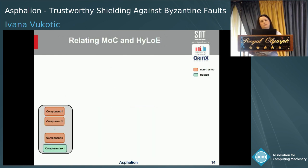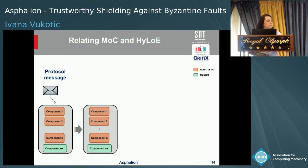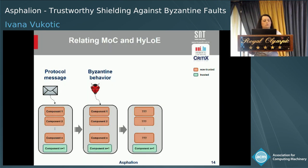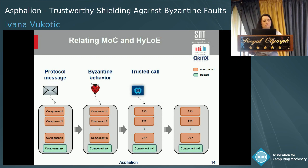Let me show you how our MOC local system evolves with respect to HILO. Assume our system receives a protocol message — the message is processed and states of some components may be updated. But if some Byzantine behavior occurs, we can no longer rely on the states of the non-trusted components; only the trusted component remains reliable. If a trusted call then occurs, we can only rely on the state of the trusted component and cannot know the current state of non-trusted components.